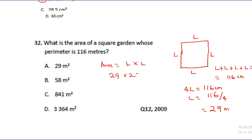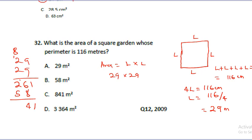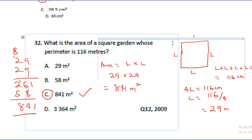Now that we know the side length is 29 meters, the area equals L times L, which is 29 times 29. Calculating: 9 times 9 is 81, carry 8; 9 times 2 is 18 plus 8 is 26; 2 times 9 is 18; 2 times 2 plus 1 is 5. This gives us 841 meters squared, and the correct answer is C.